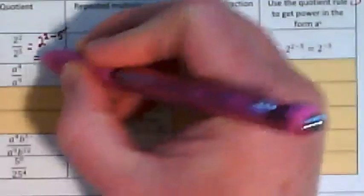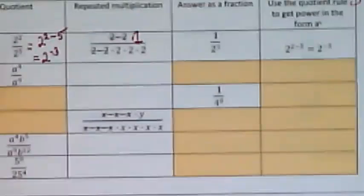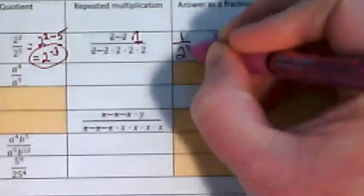What would that give us? That would give us 2 to the negative 3. And we don't want negative exponents. We want positive exponents. That's why we would take this and rewrite it as 1 over 2 to the third power.